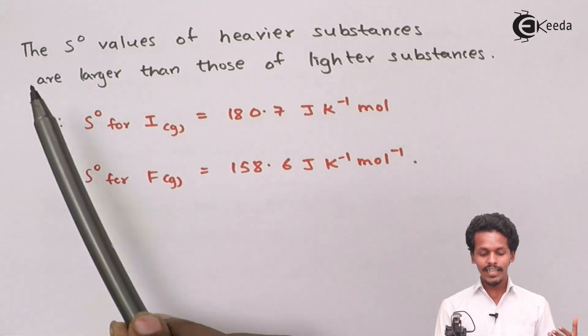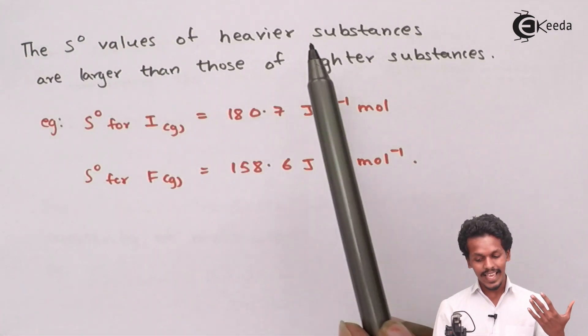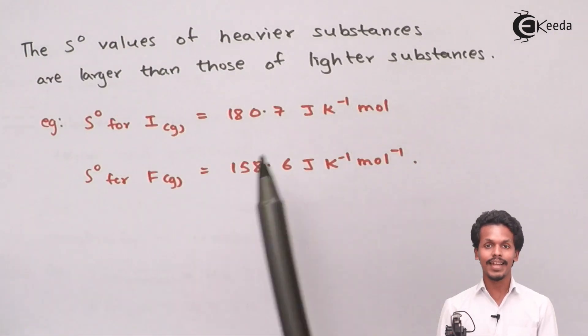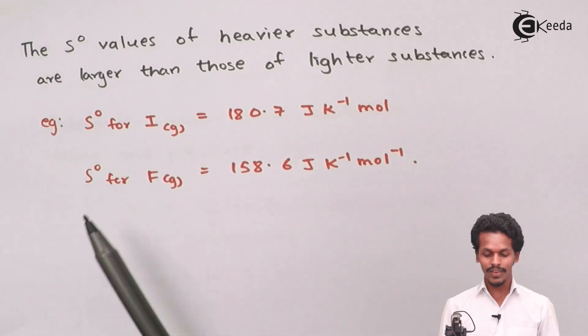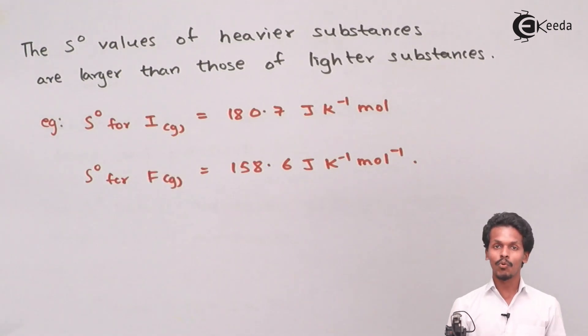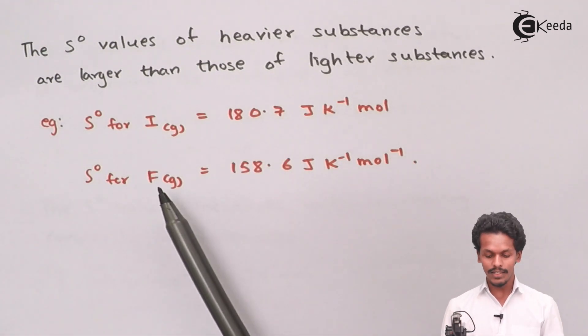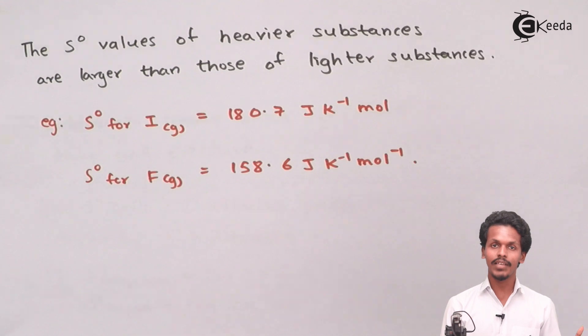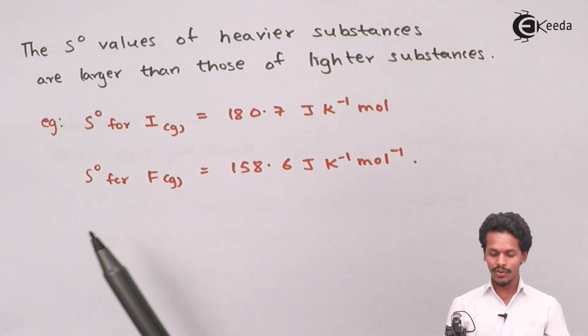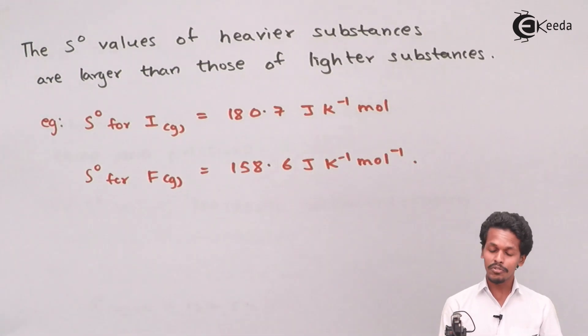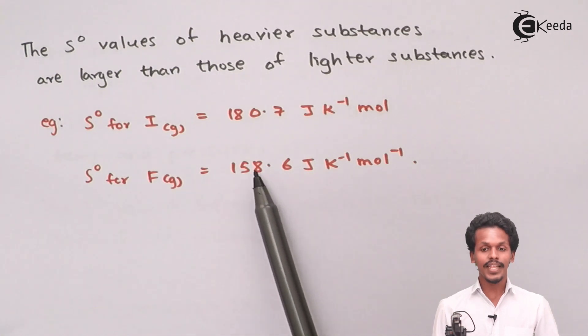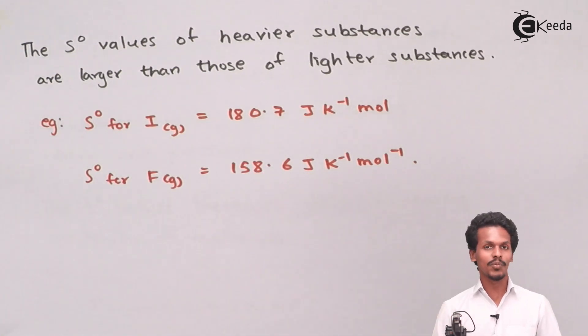The standard molar entropy of heavier substances are larger than those of lighter substances. In this example, iodine has a standard molar entropy of 180.7 joules per Kelvin per mole, more than that of fluorine, which is a smaller and lighter molecule, at 158.6 joules per Kelvin per mole.